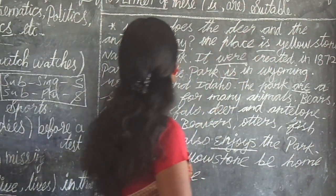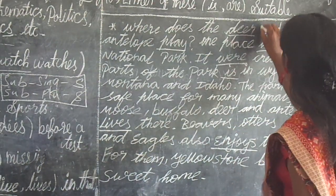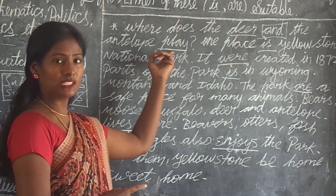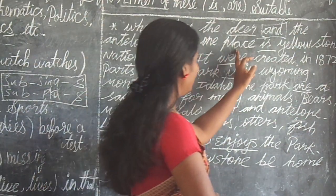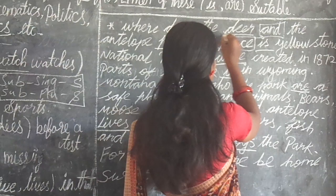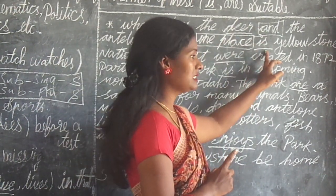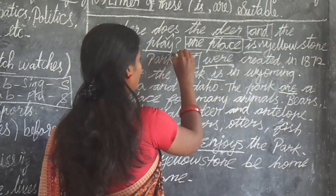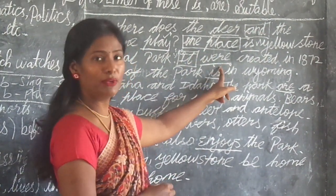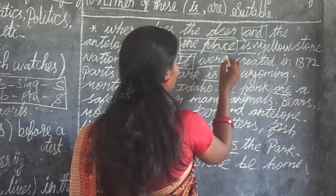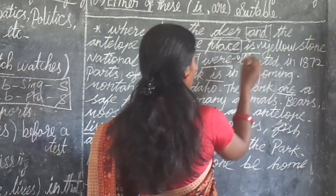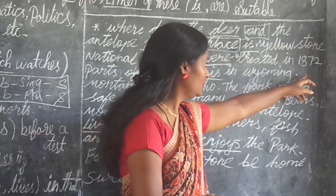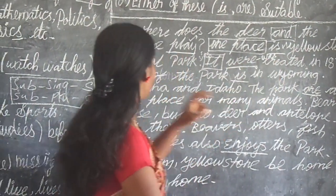Where do the deer and the antelope live? Deer and antelope are plural subjects, so the answer is plural. One place — one place is singular, so 'one place' takes a singular verb. 'It' is singular, so the verb is 'was.' It was created in 1872.